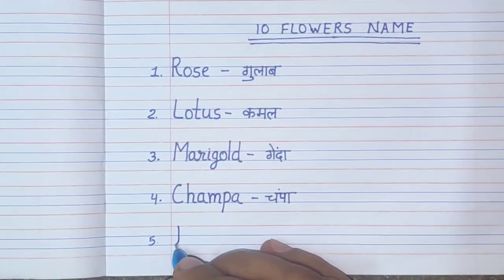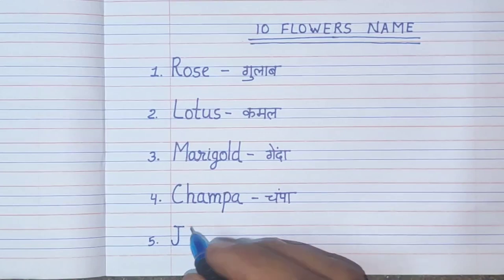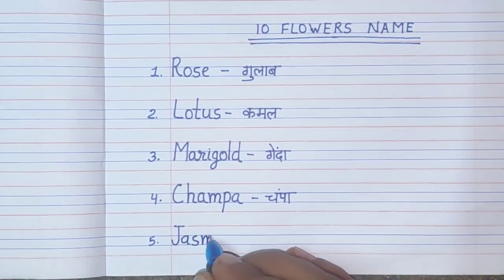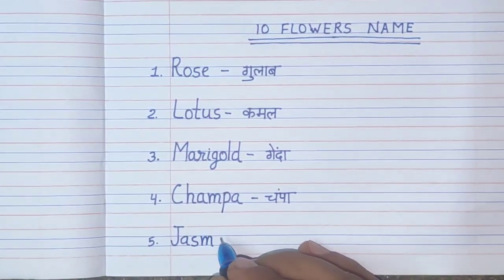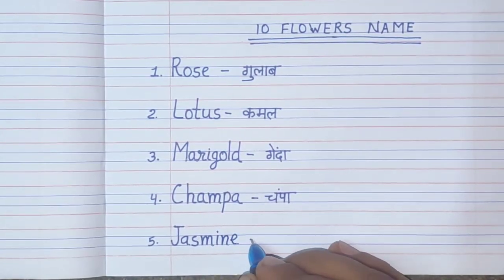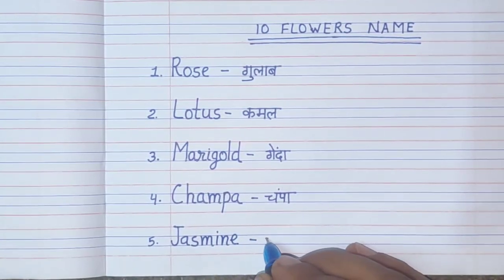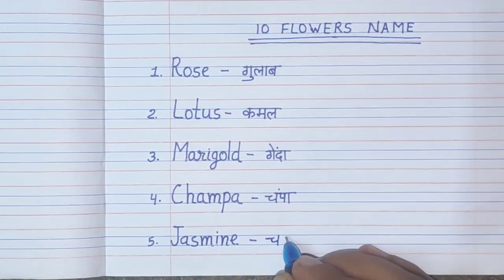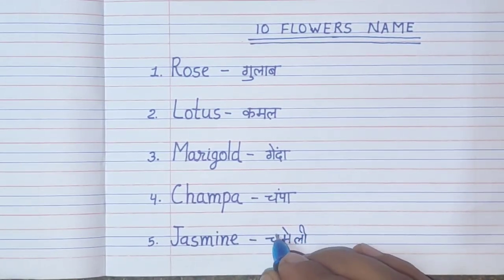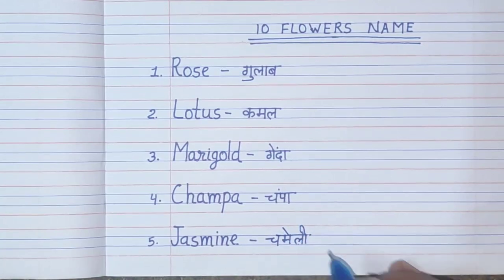Number 5. J-A-S-M-I-N-E. Jasmine. Jasmine means Chamelee.